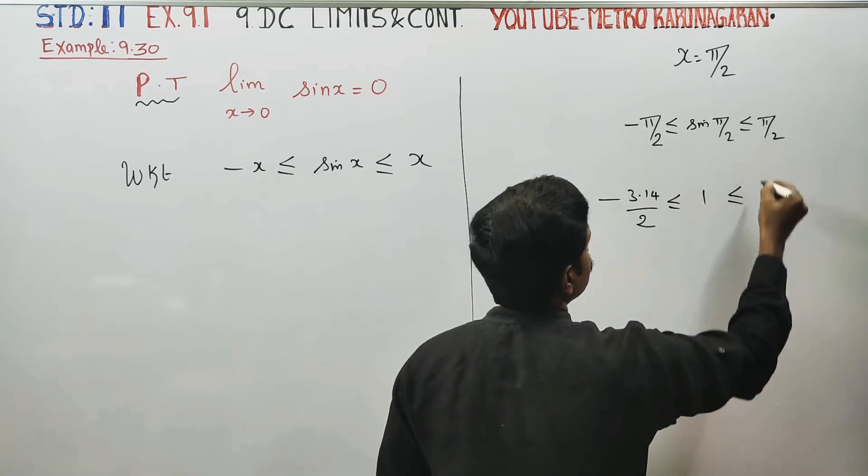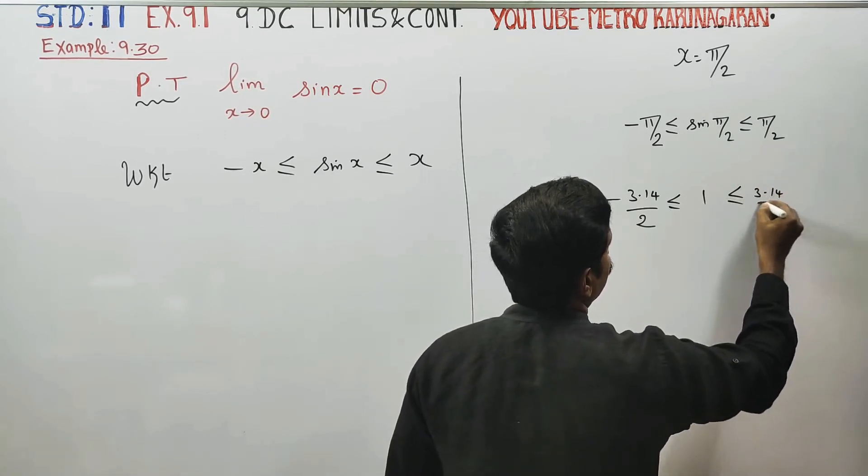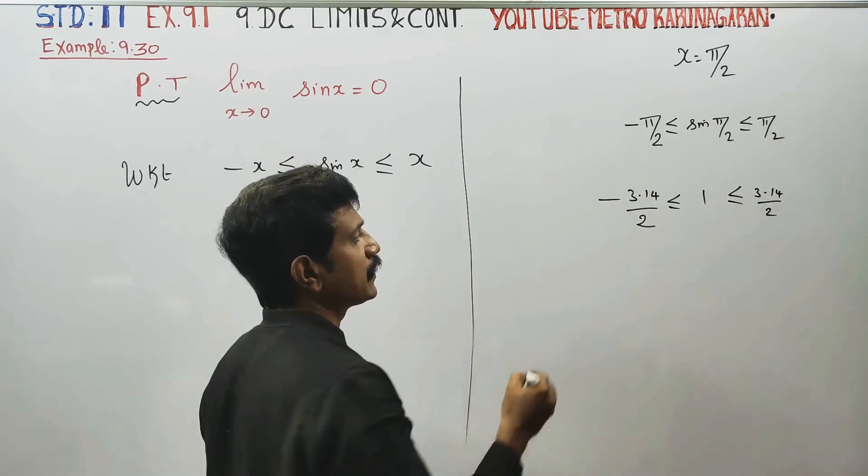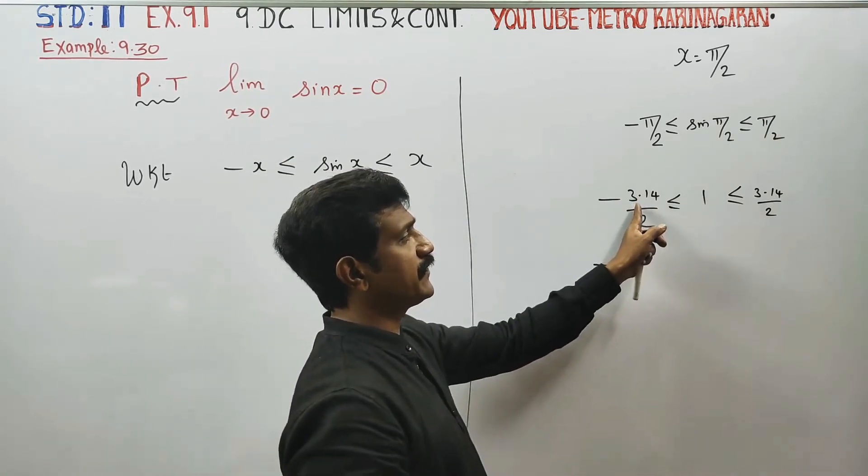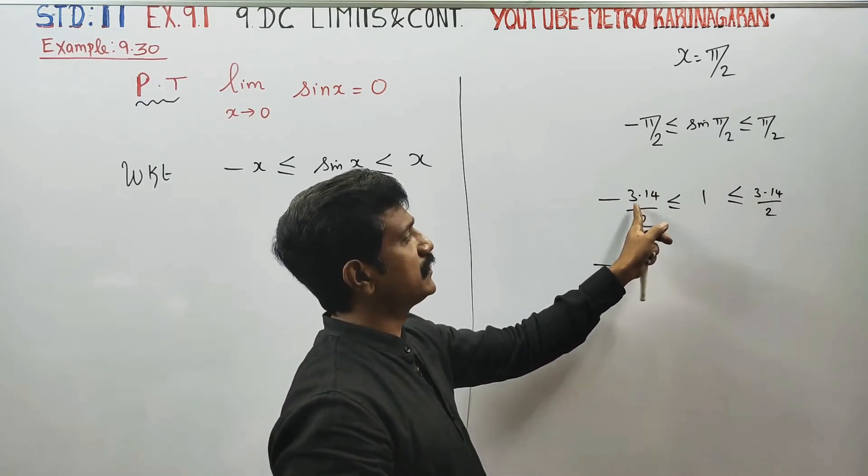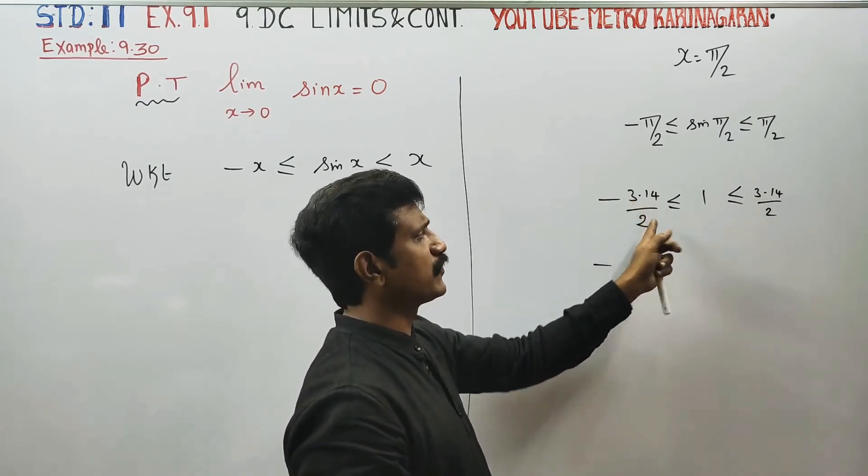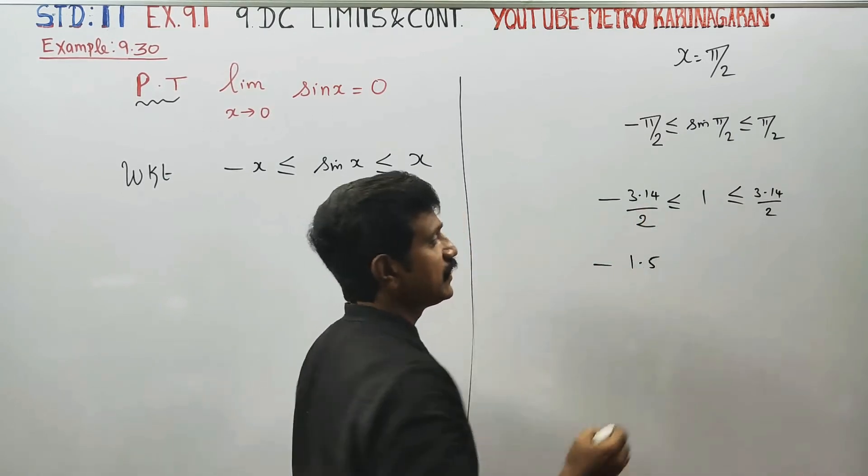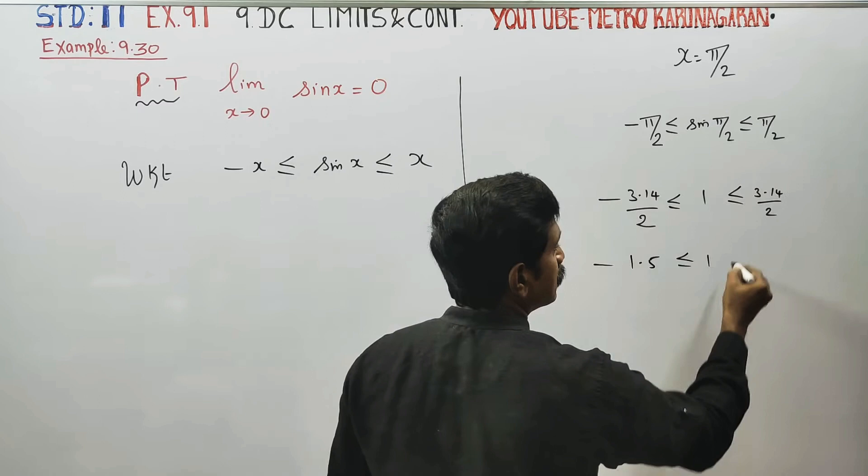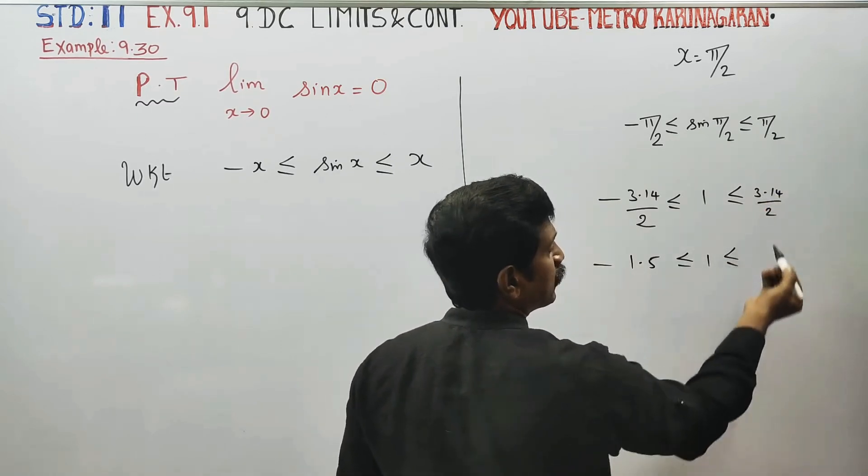Less than or equal to 3.14/2, which is approximately 1.5. So we have minus 1.5 less than or equal to 1 less than or equal to 1.5. This holds.